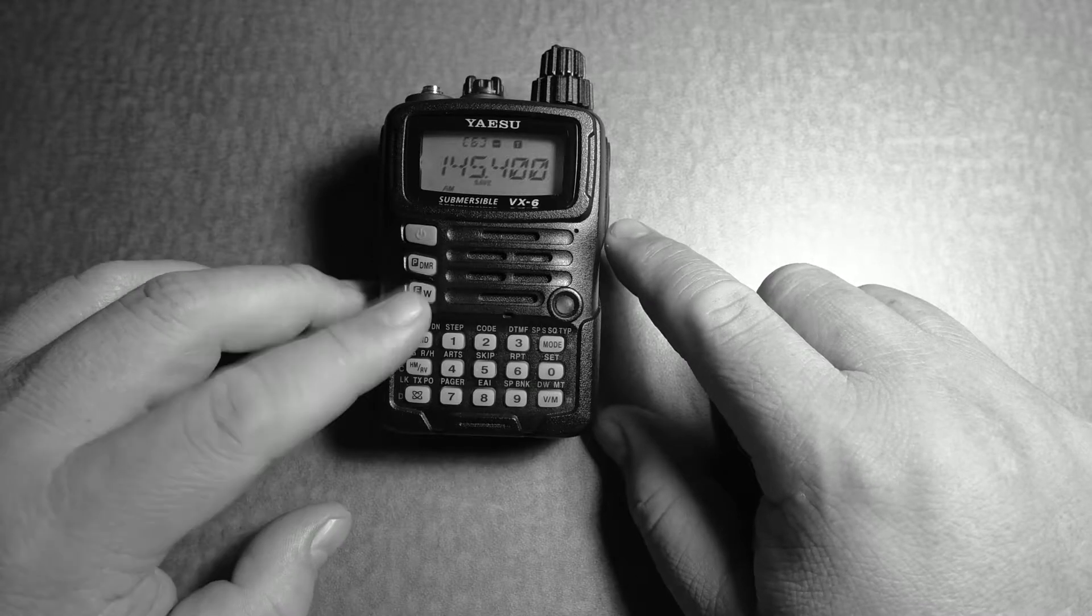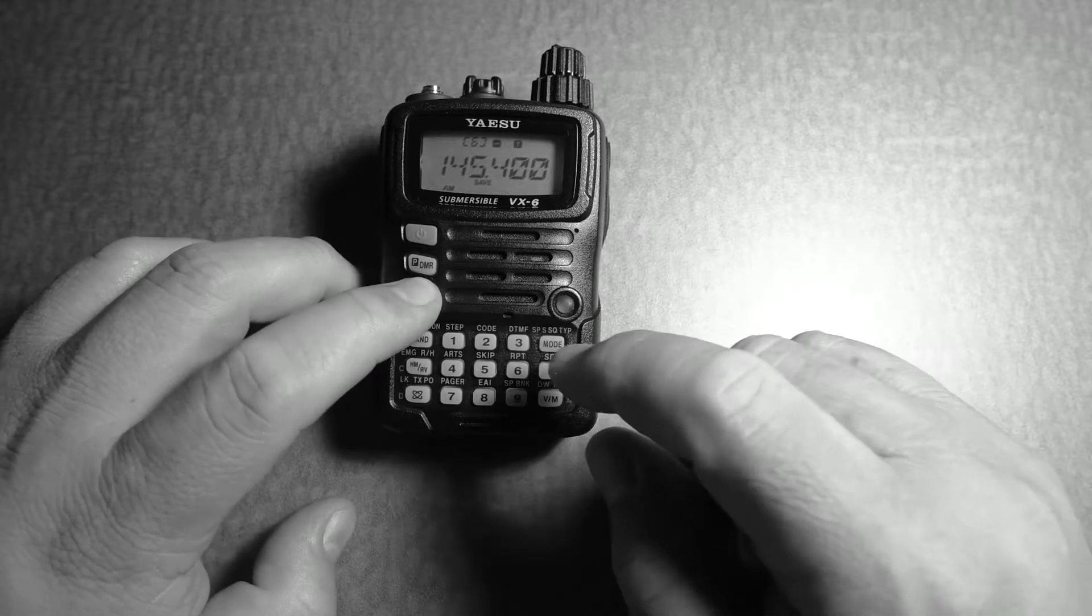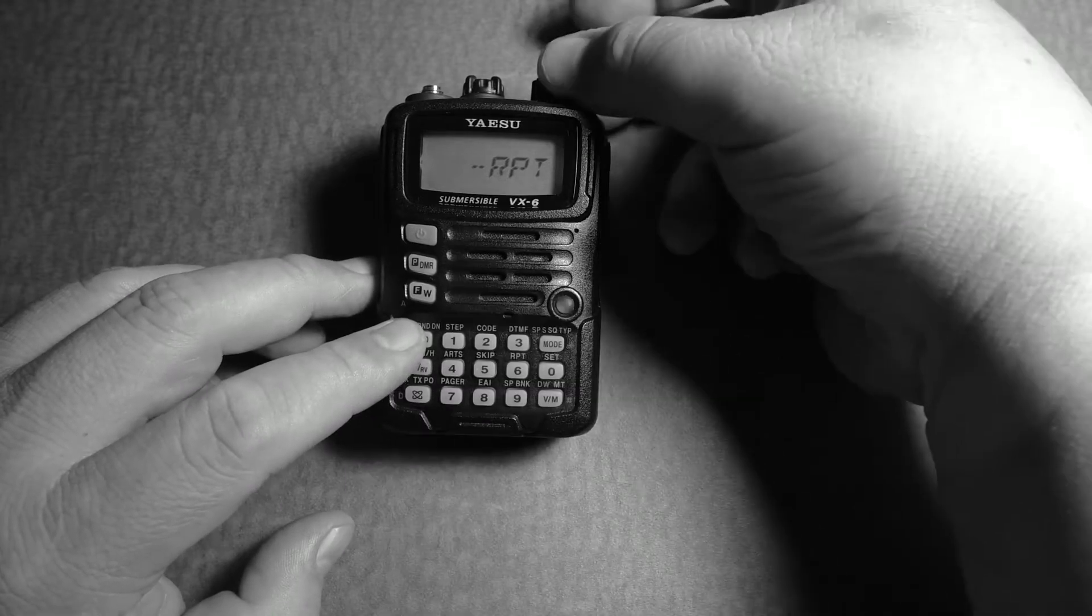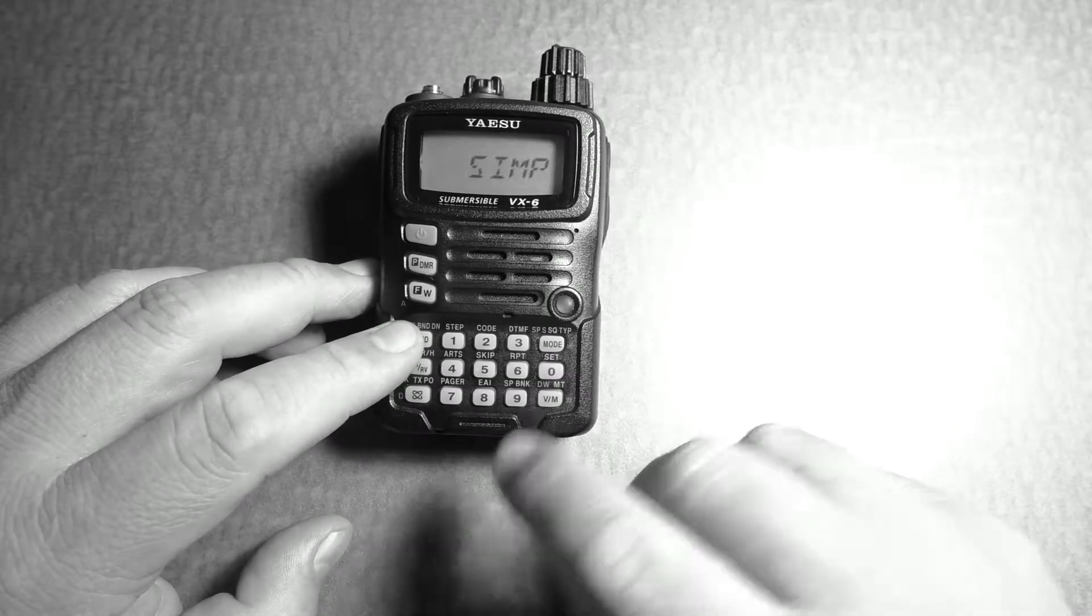And how do we do that? Well, we go with the F button and 6. You can see it was on negative. We're going to put it in SIMP for simplex.